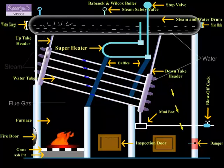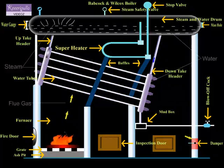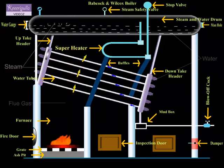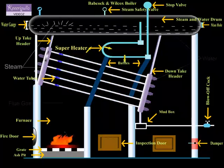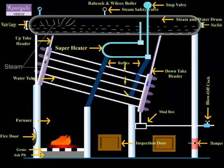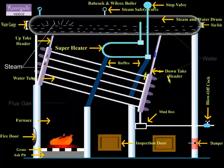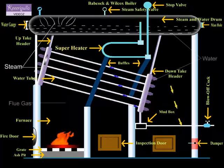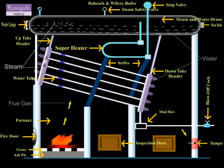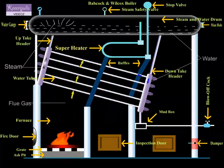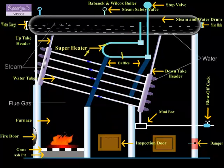The portion of the water tubes which are just above the furnace is heated at higher temperature than the other portion of the water tubes. So, the water from this portion rises in the upper direction due to the decreased density and passes into the drum through the uptake header.